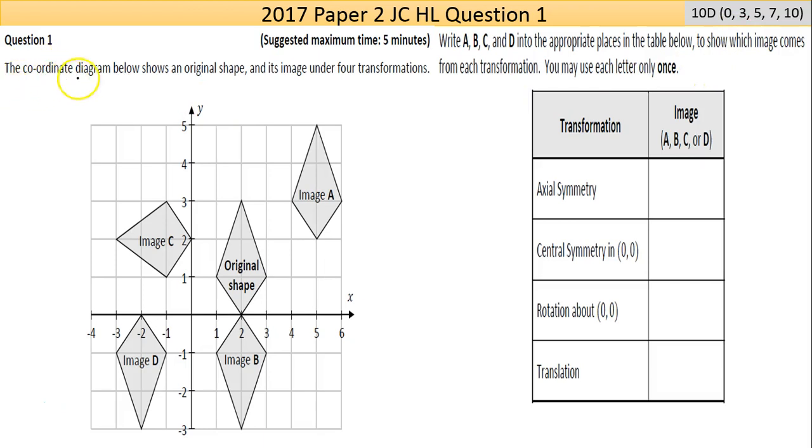Now Question 1 says the coordinate diagram below shows an original shape, that's the shape there, and its image under four transformations. That's actually a kite image, which is a type of quadrilateral.